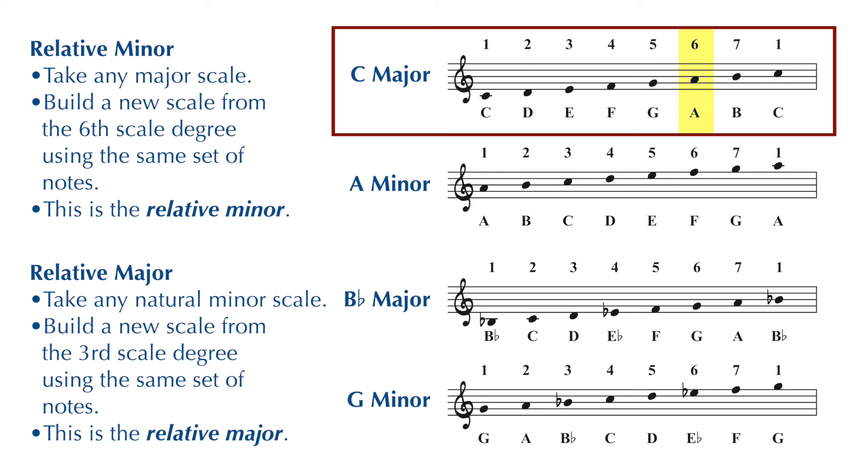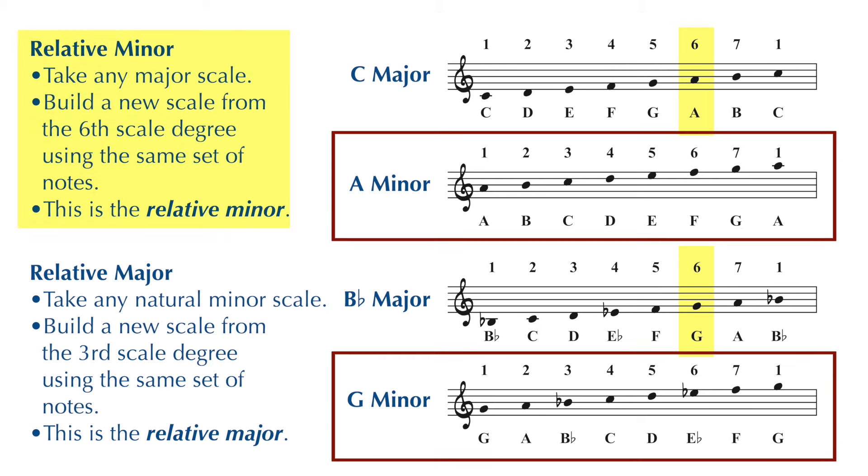And the sixth scale degree of the B flat major scale is G. And here's where we get into the concept of relative major and minor. Take any major scale and build a new scale from the sixth scale degree using the same notes, and you will be playing the relative minor of that major scale.